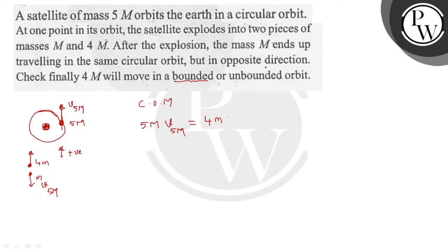So in all aspects, m is common. So when rearranging, it is 6m into v5m equals 4m into v4m. So m and m gets cancelled.